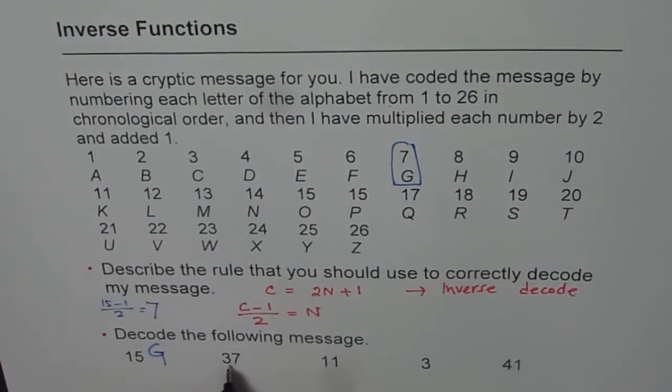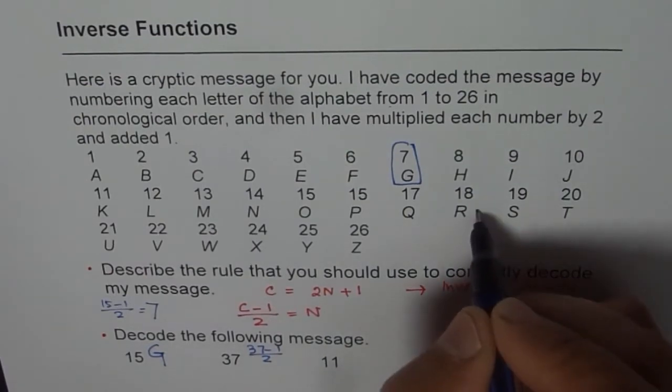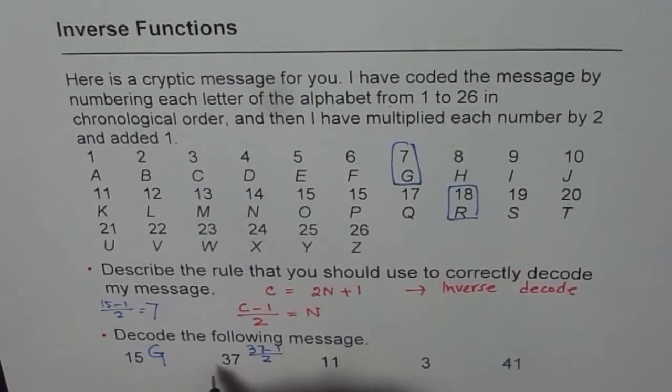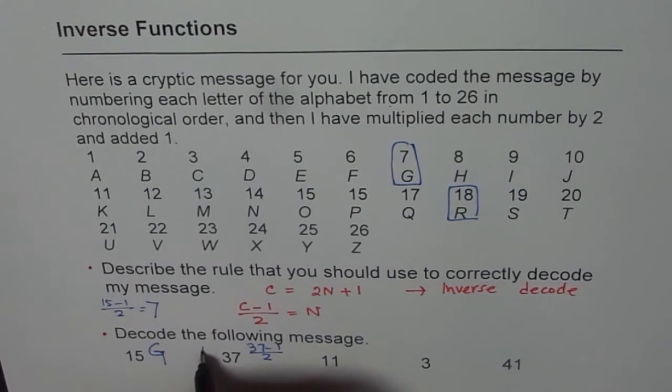37. So 1 less than 37 is 36, and then divide by 2 is 18. So we get the other number, which is R. So let me write R here.